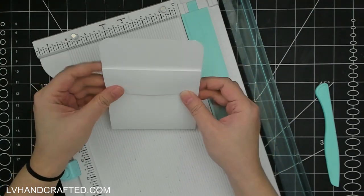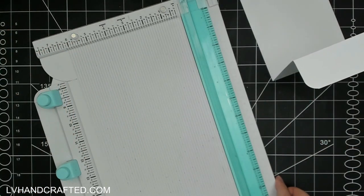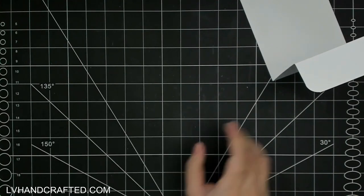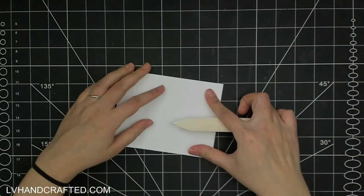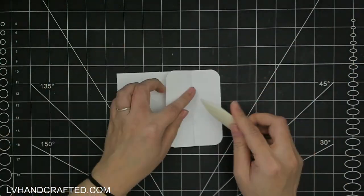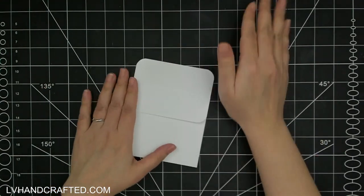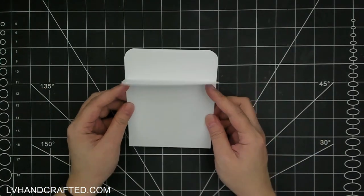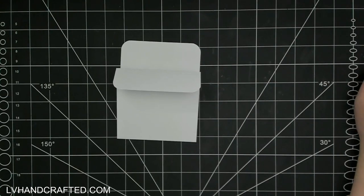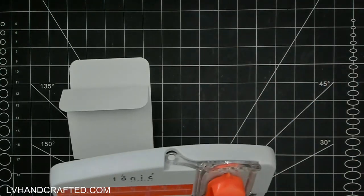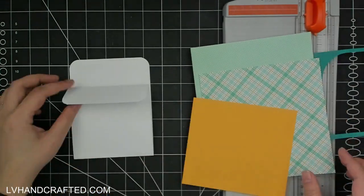I will burnish in those score lines just to really make sure that we get nice crisp folds and then I've selected some patterned papers and some solid color cardstock to decorate the various panels here.